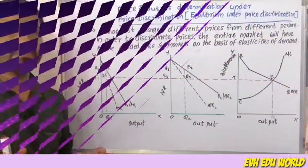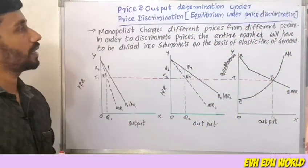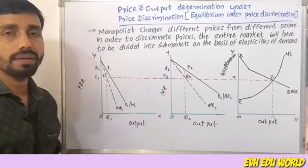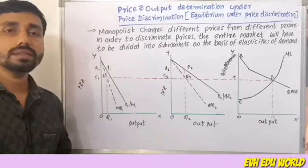In the category of market structure, price discrimination is given by price and output determination. That is why we are given price discrimination in this class. Price and output determination under price discrimination — equilibrium under price discrimination.